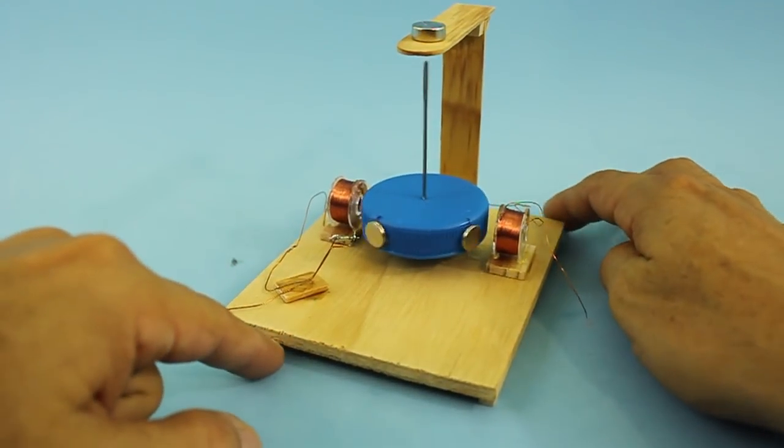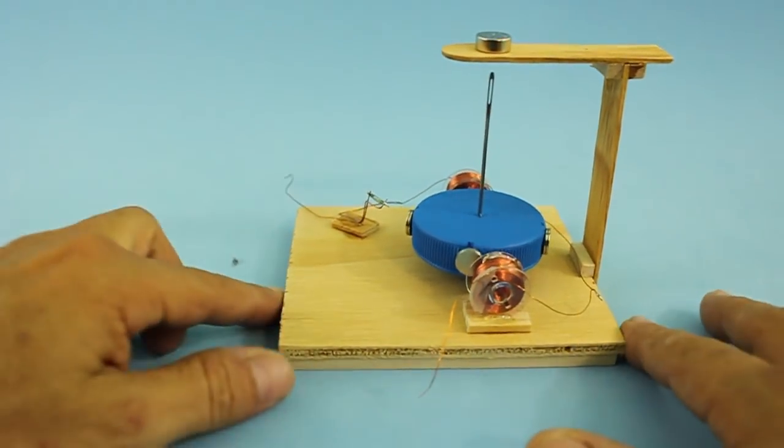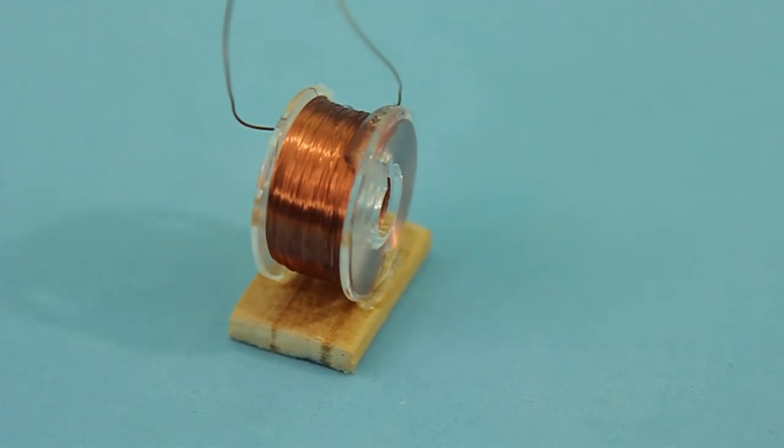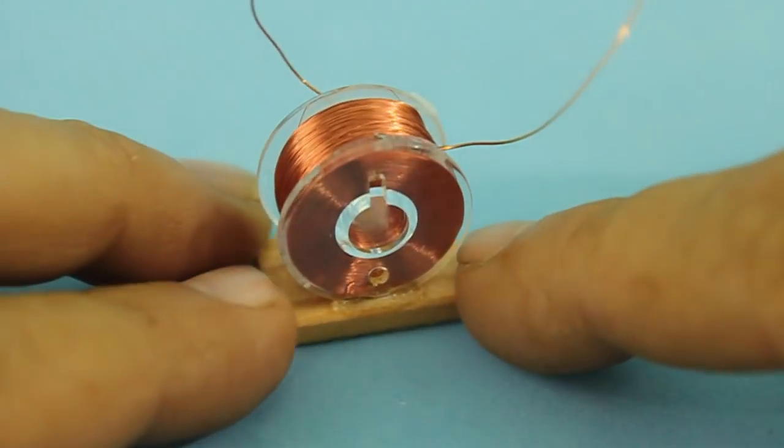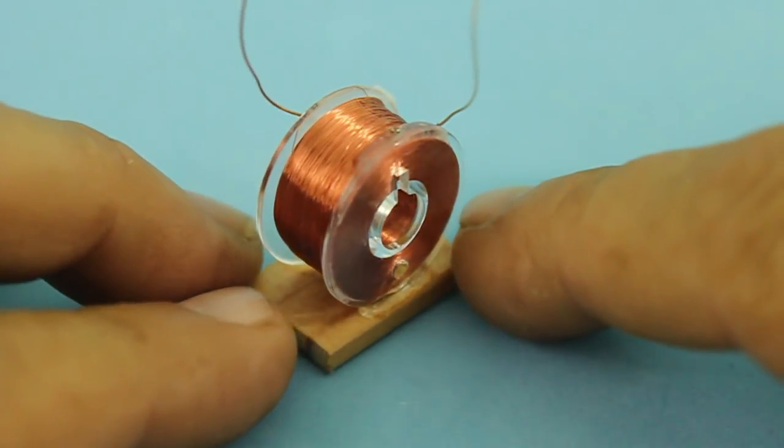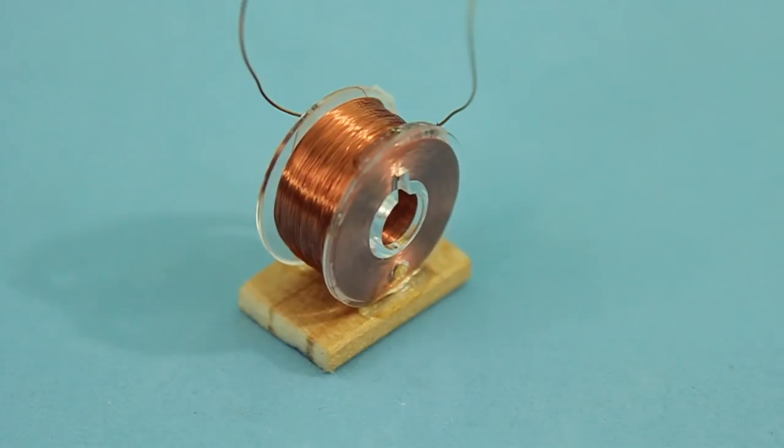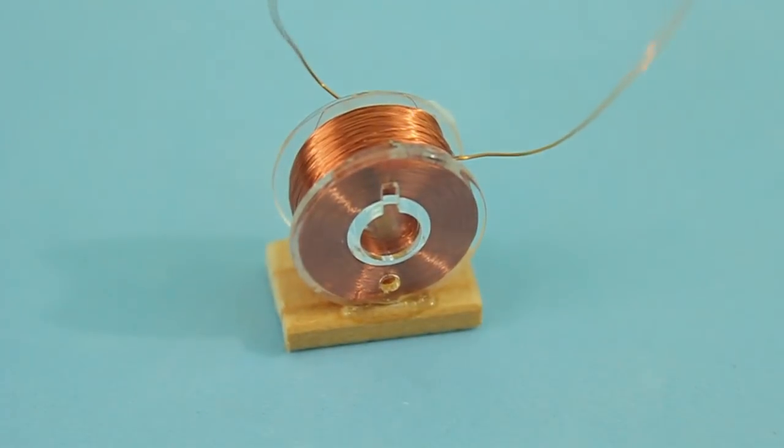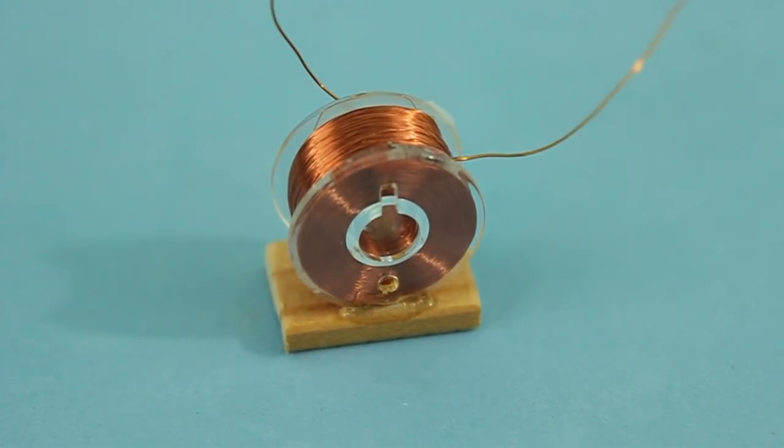But what makes this different is the design of the coils. The coils are wound on this plastic bobbin for sewing machines. I am using magnet wire size 42 AWG which is very thin. It is finer than a human hair. This coil has several thousand turns and a resistance of 1600 ohms.